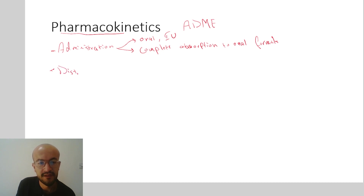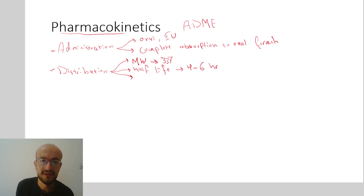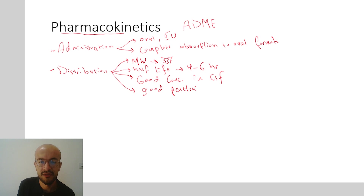For distribution: the molecular weight of linezolid is 373, which is low — that's why it has good absorption. The half-life is four to six hours. Linezolid crosses the blood-brain barrier in good concentrations, achieving good concentrations in the cerebrospinal fluid. It also has good penetration to bones and joints, so it can be used to treat osteomyelitis.